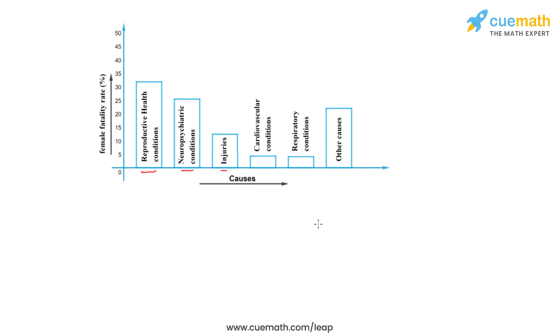One cause will be represented by one unit as shown here. On the y-axis we have represented the female fatality rate, and the scale is one unit will be equal to 5 percentage.